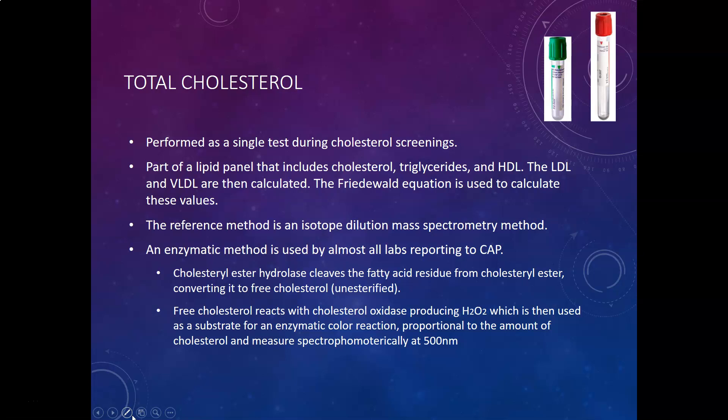The reference method for total cholesterol is isotope dilution mass spectrometry, but the enzymatic method is what is used by most clinical chemistry labs. In this enzymatic method, cholesterol ester hydrolase cleaves the fatty acid residue from cholesterol ester, converting it to free cholesterol (unesterified). That free cholesterol then reacts with cholesterol oxidase, producing hydrogen peroxide, which is used as a substrate for an enzymatic color reaction proportional to the amount of cholesterol, measured spectrophotometrically at about 500 nanometers.